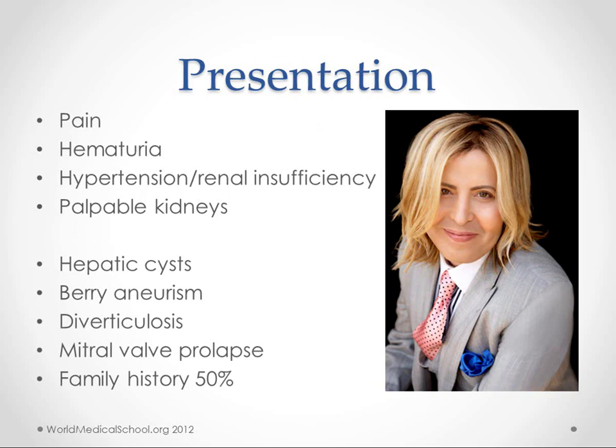The presentation includes pain, hematuria, hypertension, renal insufficiency, and palpable kidneys. The extra-renal manifestations are hepatic cysts, berry aneurysms, diverticulosis, and mitral valve prolapse. About 50% of these people have a family history. Another important note is that many of these cases go undiagnosed — they estimate around 50% — which is due to the wide spectrum of how severe this can be.